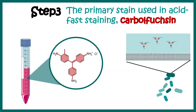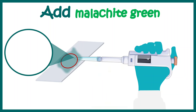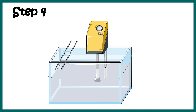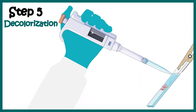Once we add malachite green, we wait for some incubation time for the stain to penetrate. Honestly, this stain does not get in very easily, which is why we sometimes have to place these slides over steam — steam helps the stain enter the endospore wall more efficiently. After steaming, the next step is decolorization.